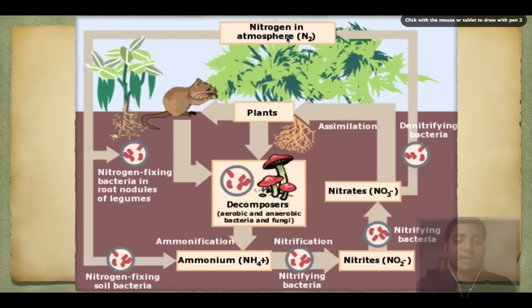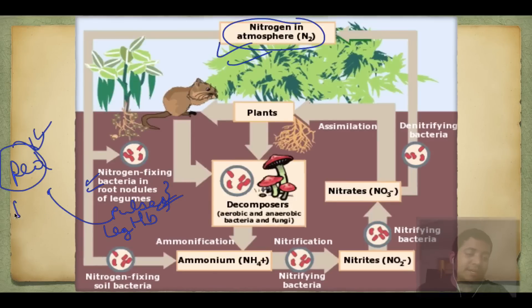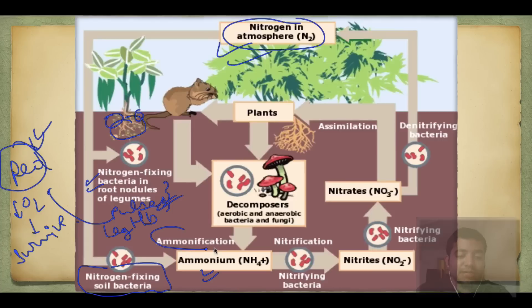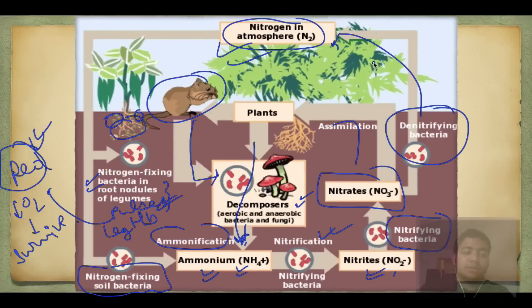In the nitrogen cycle diagram: atmospheric nitrogen is fixed by nitrogen-fixing bacteria and root nodules of legume plants. Leghemoglobin transfers oxygen and decreases oxygen concentration so bacteria can survive and do nitrogen fixation - if you cut the nodules they are red due to leghemoglobin. By ammonification it is converted into ammonium ions; by nitrification into nitrite, then by nitrifying bacteria into nitrate. Plants assimilate it; animals eat plants, then die, and decomposers release nitrogen and ammonia. Finally, denitrifying bacteria convert ammonia back to atmospheric nitrogen, completing the cycle.